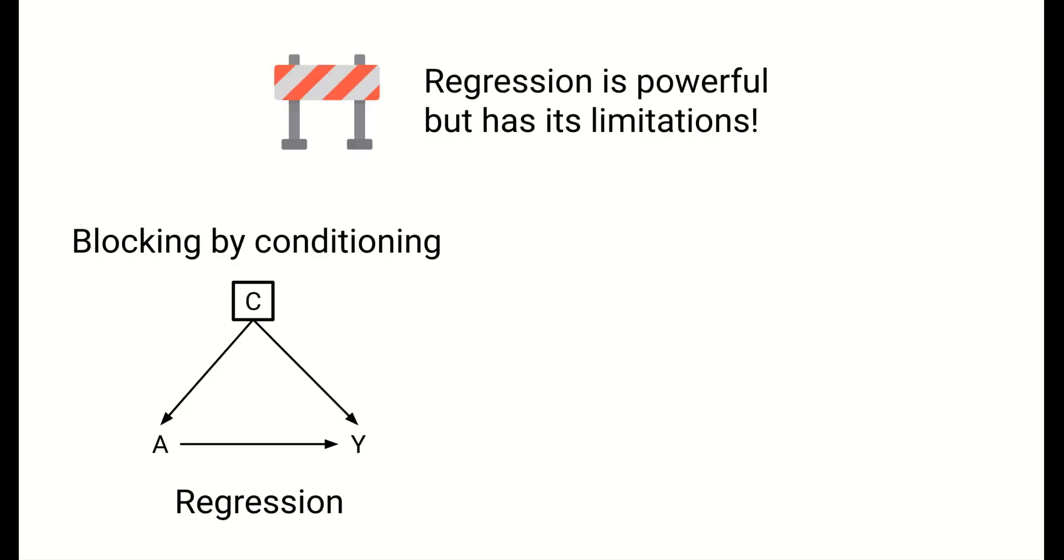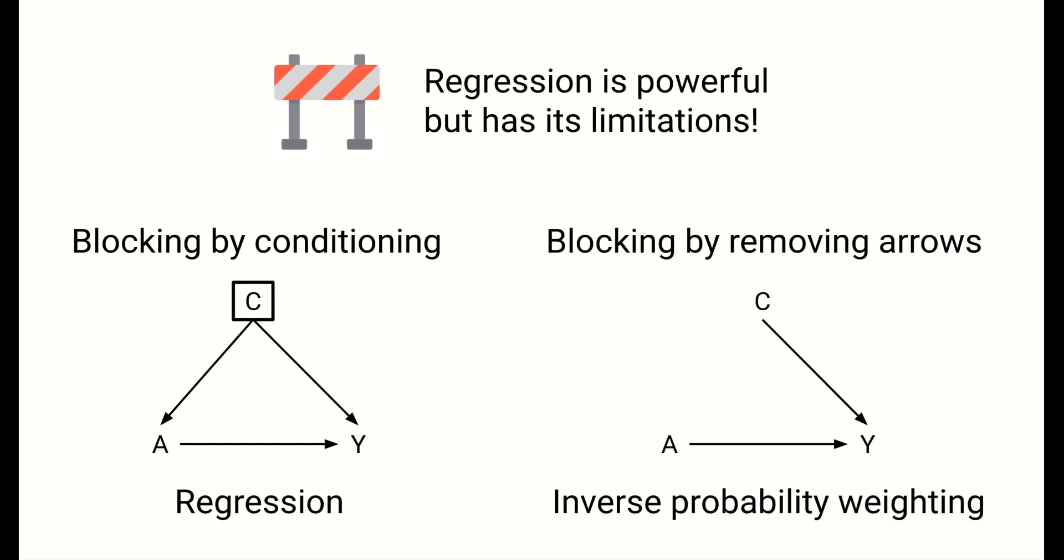So while regression is a very useful tool, it has its limitations. The strategy that regression uses is to block non-causal paths by conditioning on variables, boxing nodes on the causal graph. In some cases, trying to fully block non-causal paths by conditioning will end up being impossible because we end up needing to condition on a collider node on a non-causal path. Another technique for estimating causal effects essentially removes troublesome arrows in non-causal paths. This technique is called inverse probability weighting, and we'll discuss this next.